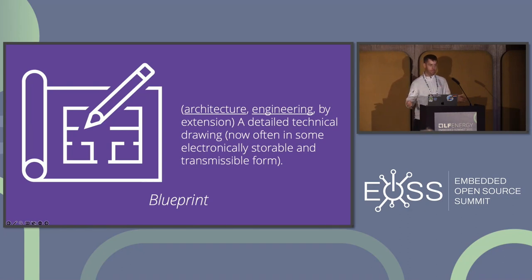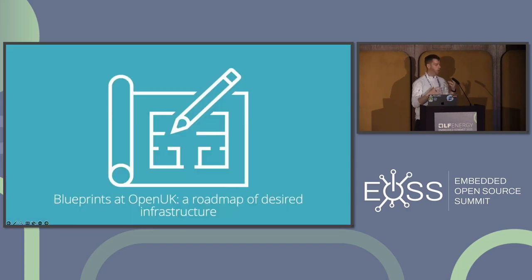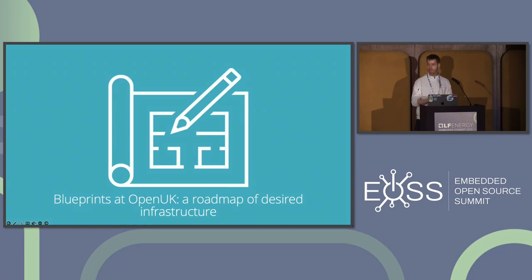Using an open definition according to Wiktionary, blueprints are architecture or engineering — by extension, a detailed technical drawing, now often in some electronically storable and transmissible form. For Open UK, blueprints are a comprehensive guide or roadmap for creating sustainable and standardised technology infrastructure. It contains a detailed plan of the required components that an industry thinks they need and describes the impact that those components create, formulated based upon the principles of open source software, open source hardware and open data. Each blueprint is created with a diverse group of volunteers from the private and the public sector.